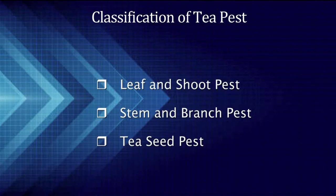Now, come to the classification of tea pests. Generally, the tea insect pests infest various parts of the tea plants including leaves, stem, roots and flowers. But the maximum number of pests occurs on the foliage. Thus, on that basis, tea pests can be classified into three categories: leaf and shoot pests, stem and branch pests, and tea seed pests.